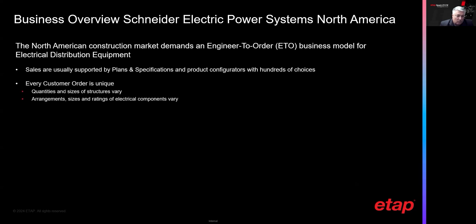As I mentioned, every customer order is unique. The quantities and sizes of structures required to house the electrical components vary from one order to the next. The arrangements and sizes and ratings of the electrical components themselves vary within those configurations. The bottom line is our manufacturing process is discrete — it's not repetitive. It's very different than, say, an automotive or airline industry where generally the same model is being built and the wiring is relatively the same with some slight modifications. In our case, the wiring is unique every time.